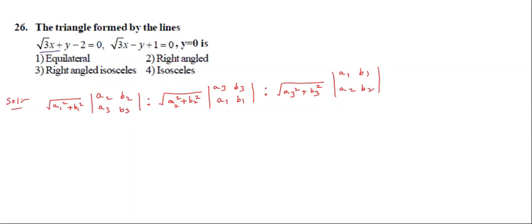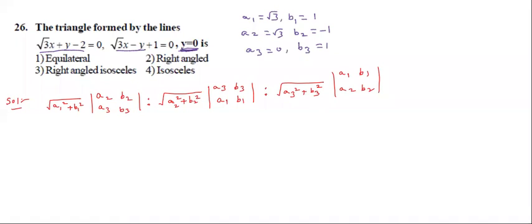Observe that these are the values: a1 = √3, b1 = 1. Next, a2 = √3, b2 = −1. Now y = 0 is given, so a3 = 0, b3 = 1. These values we substitute into that formula to get the answer.